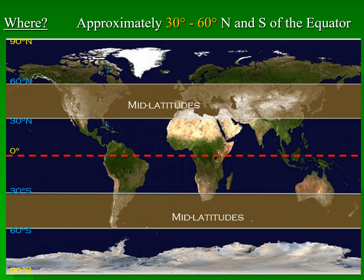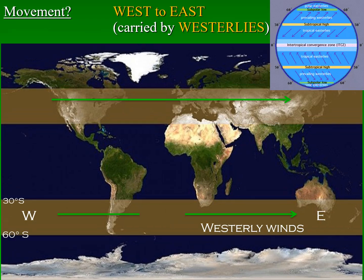Because they are called cyclones, we need to remember all the characteristics of a low pressure cell. In Grade 11 we were taught that the westerly winds are the major winds that flow between 30 and 60 degrees in both south and north of the equator. The westerly winds are called westerly winds because they originate in the west and blow eastwards.